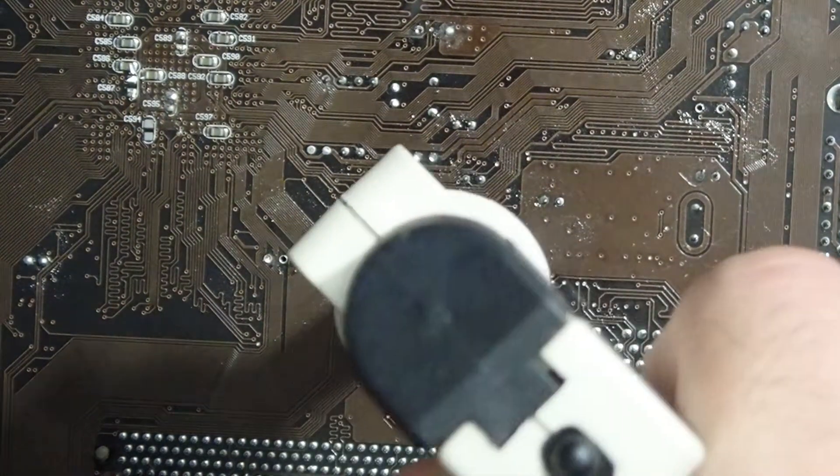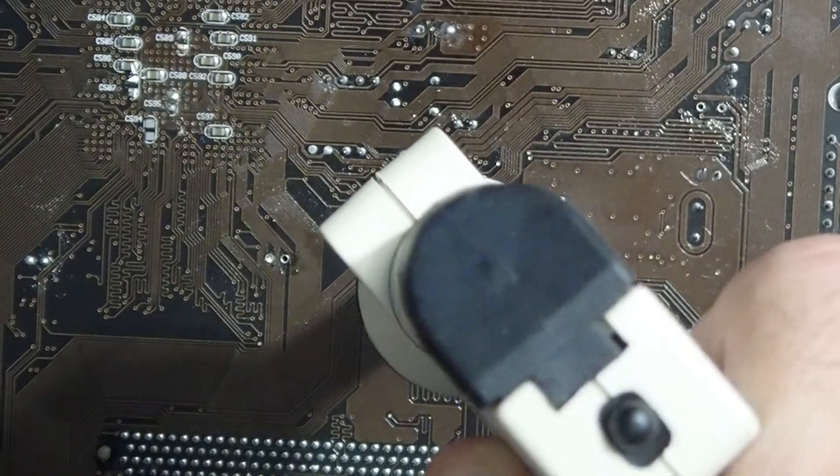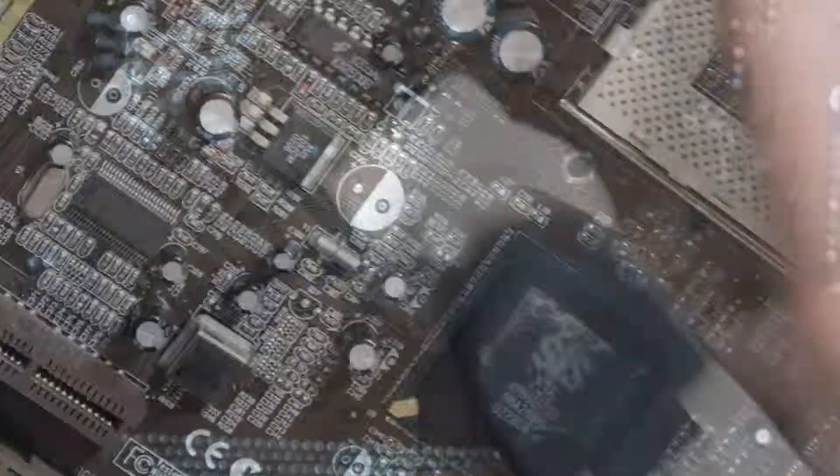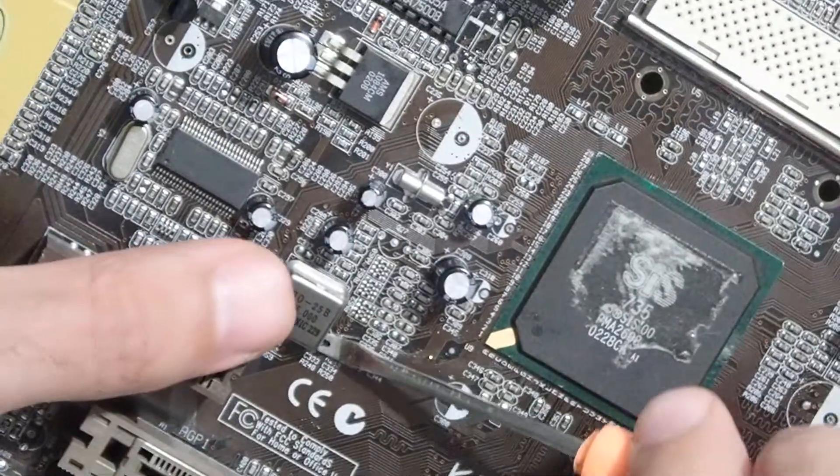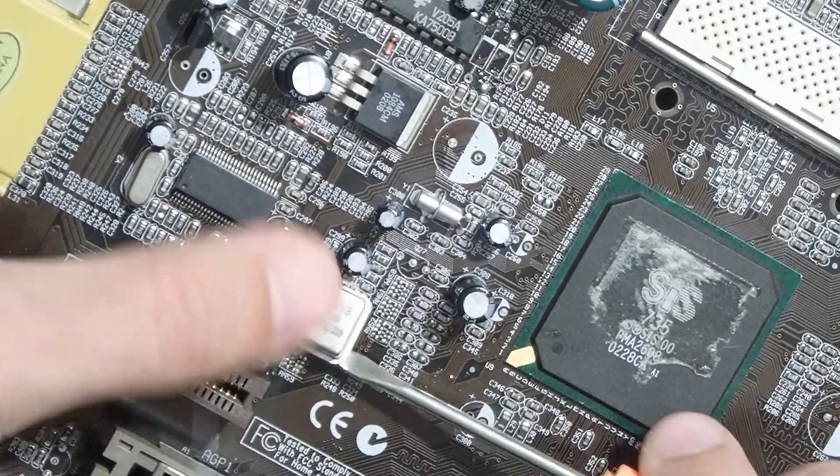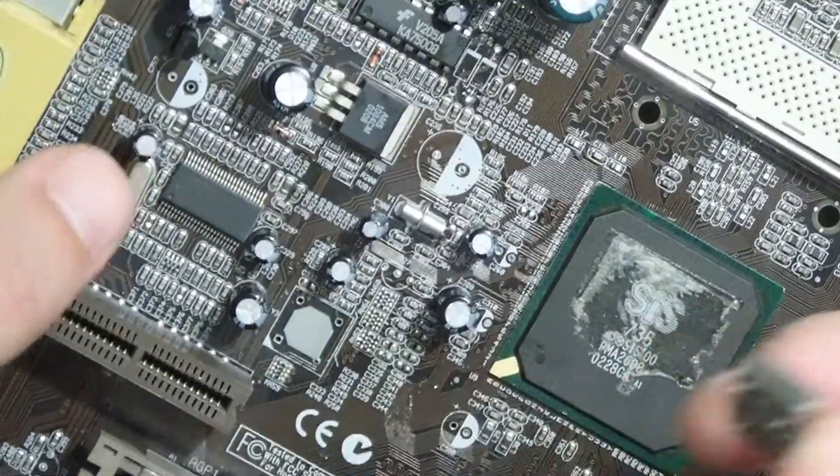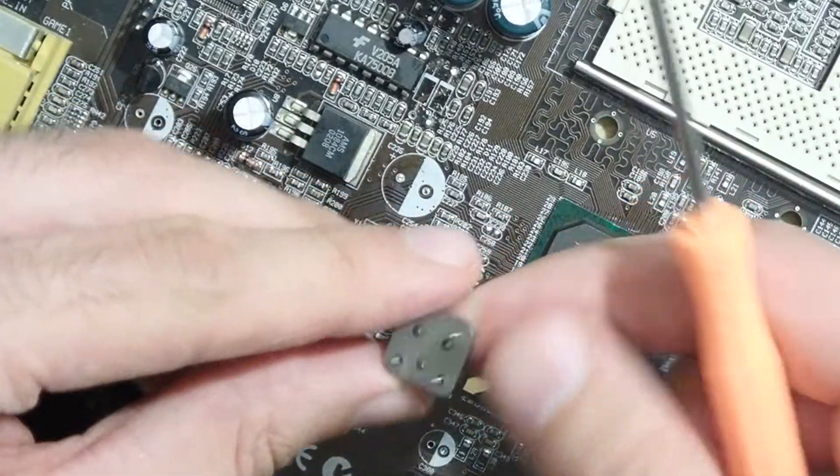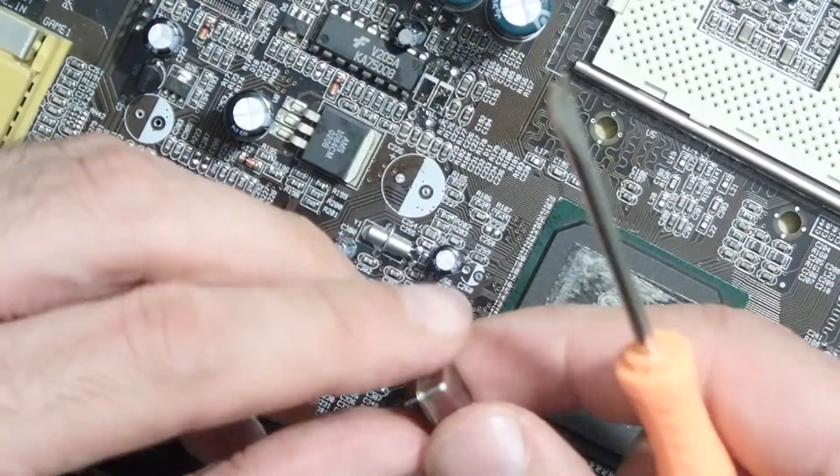So wiggling, and yeah, so now all the contacts are free and the part is almost falling out of the board. That was pretty much simple and fast.